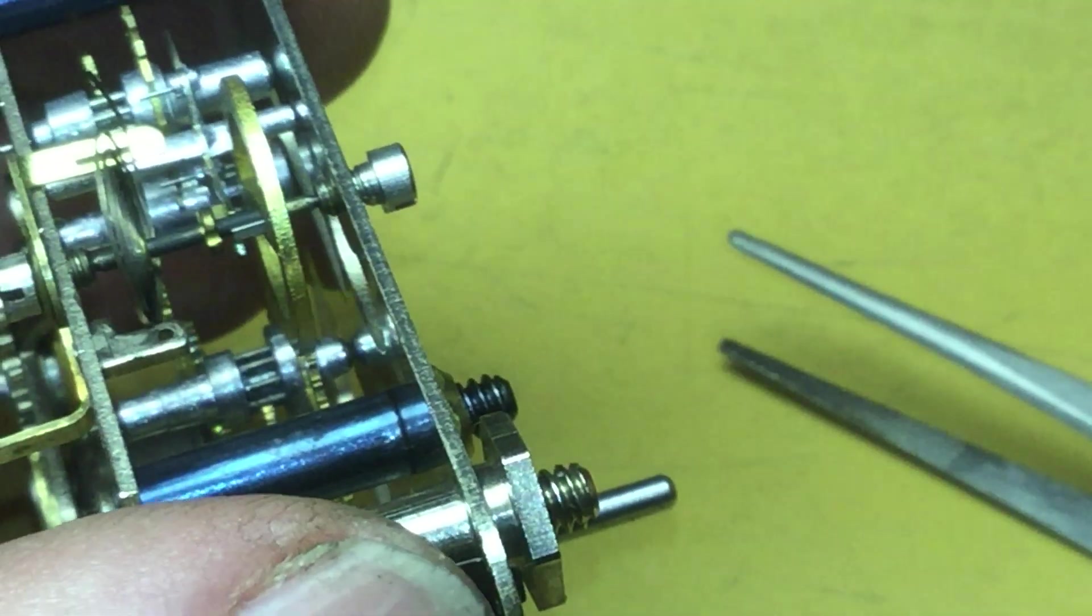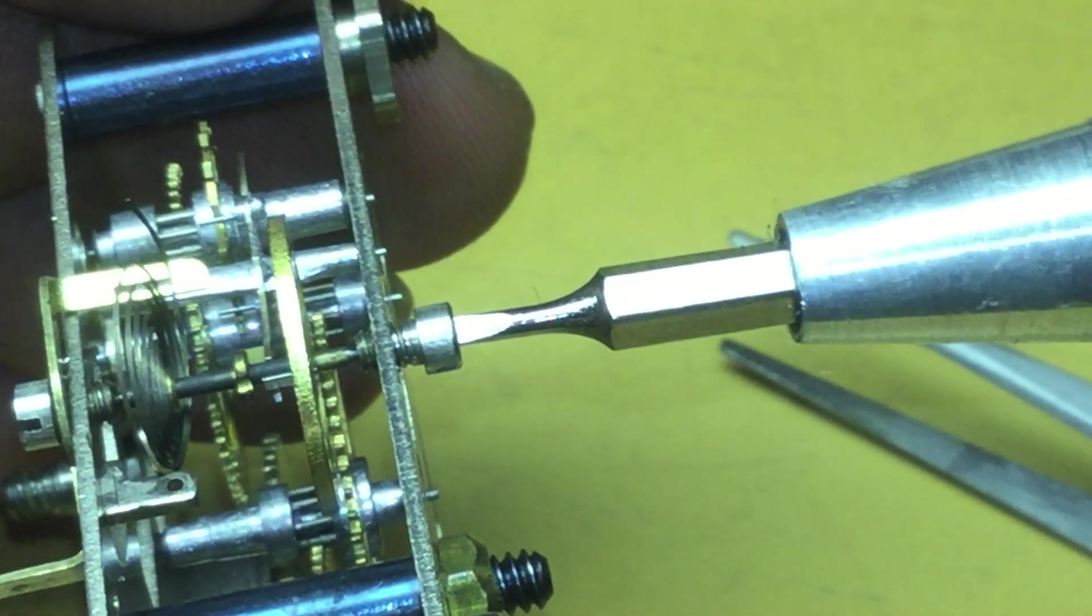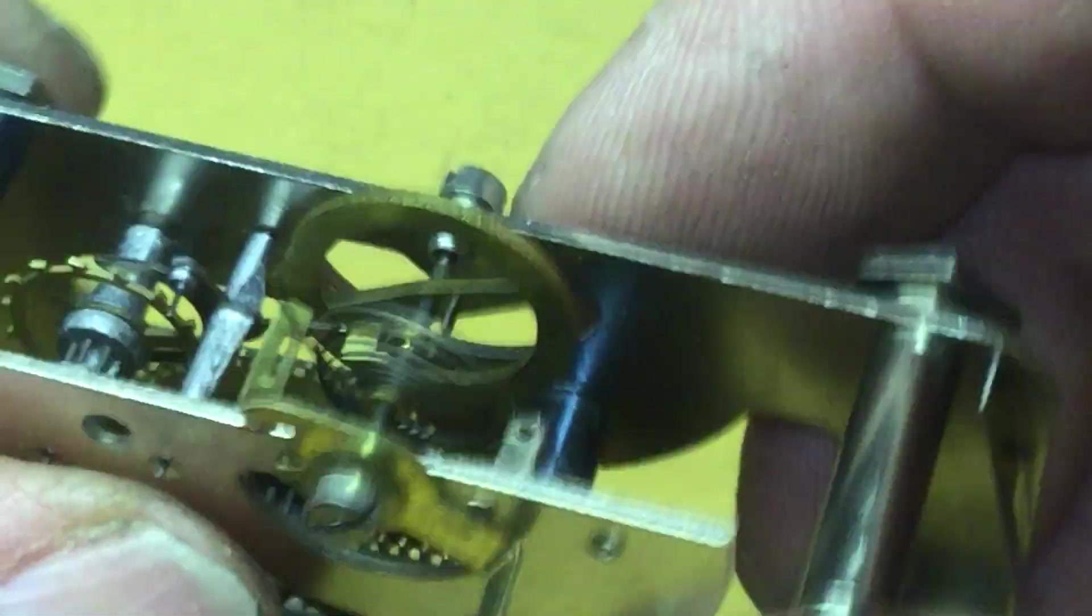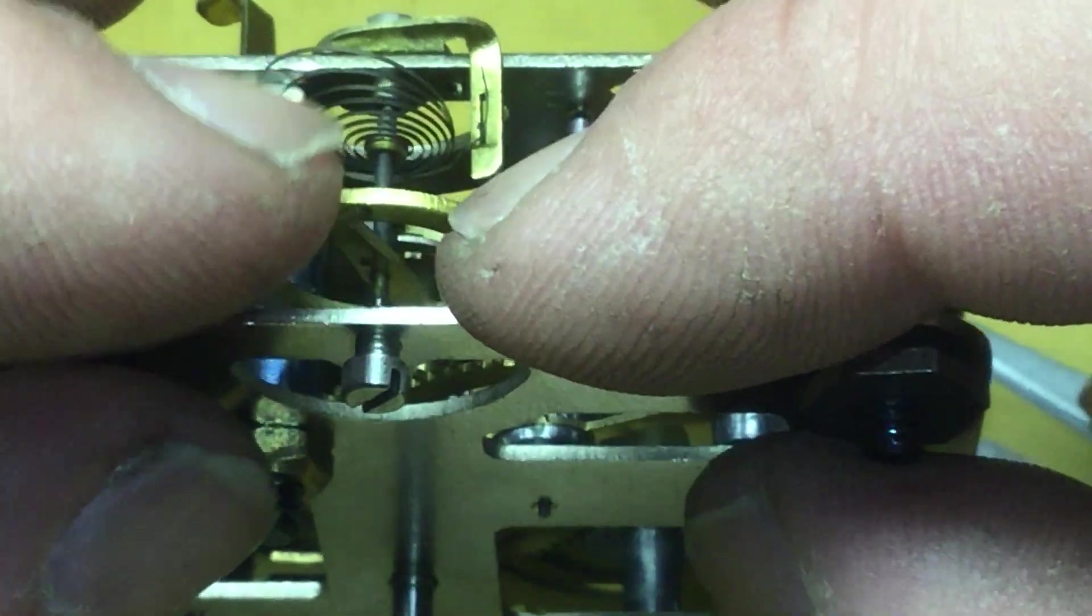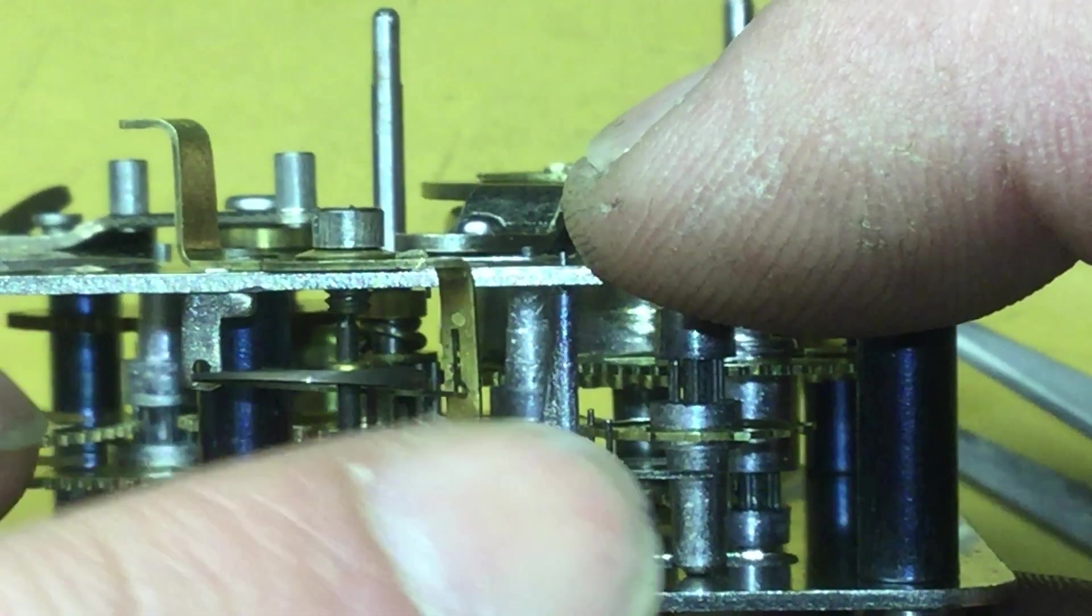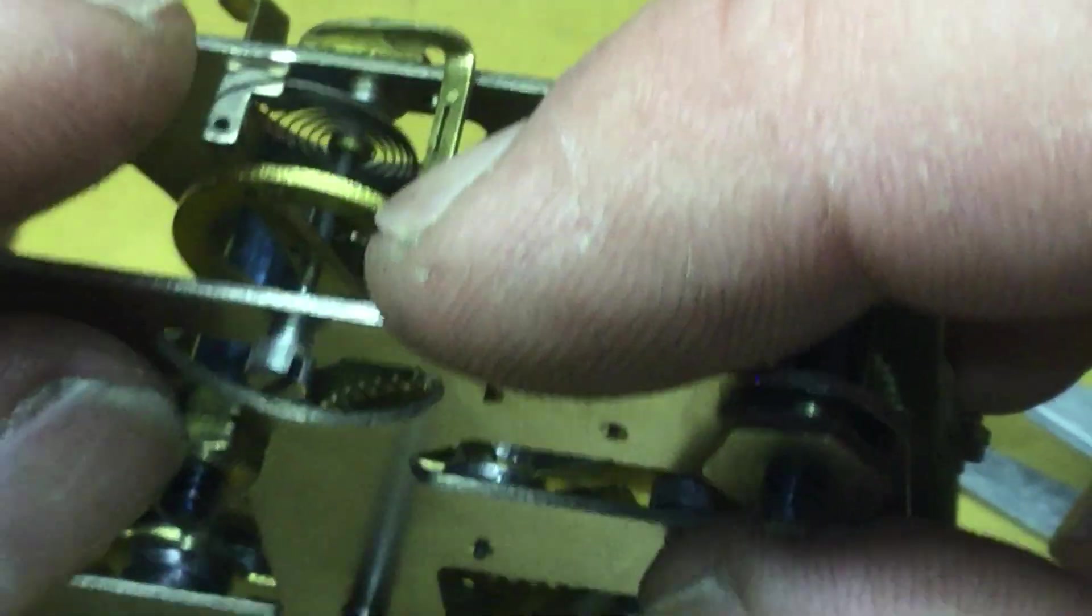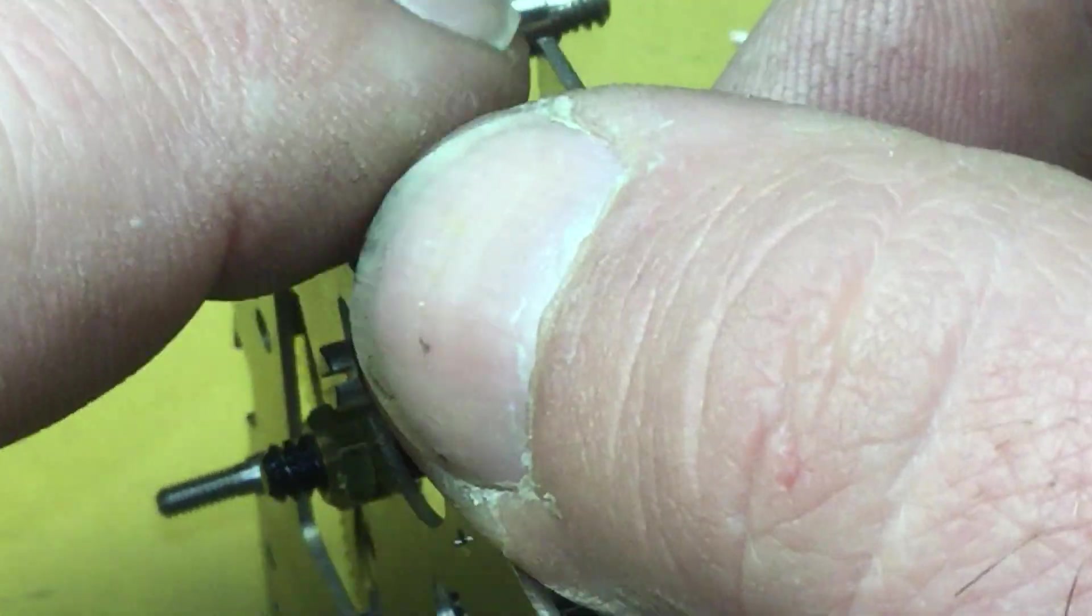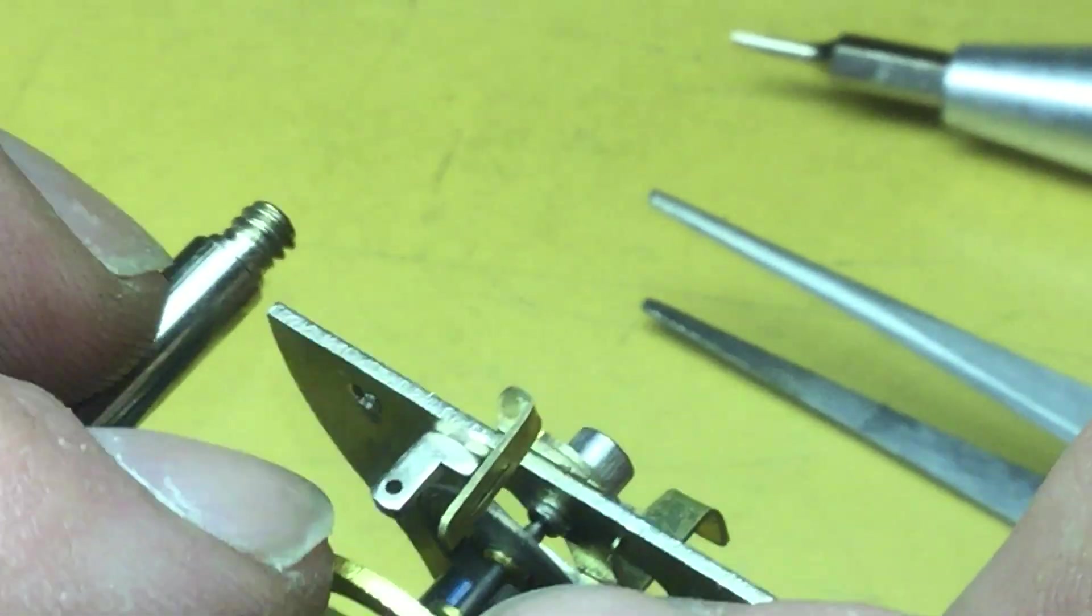I might have to back it up just a touch more because when the movement is installed in the case, it might squash things down just enough that it's not going to be free. Now we need to get the hairspring in the right place. And that's not right. We're going to need to come around this way with it.